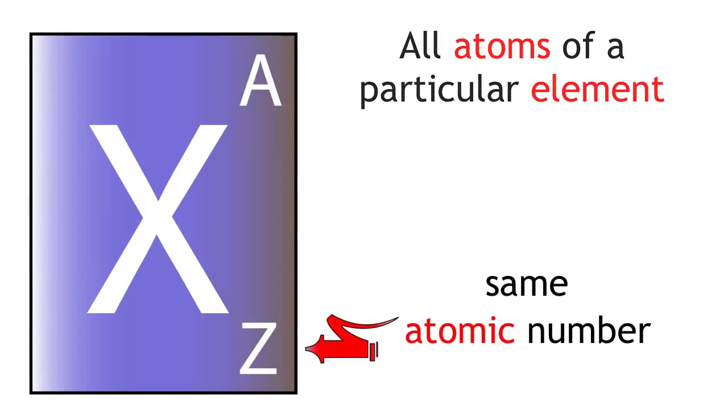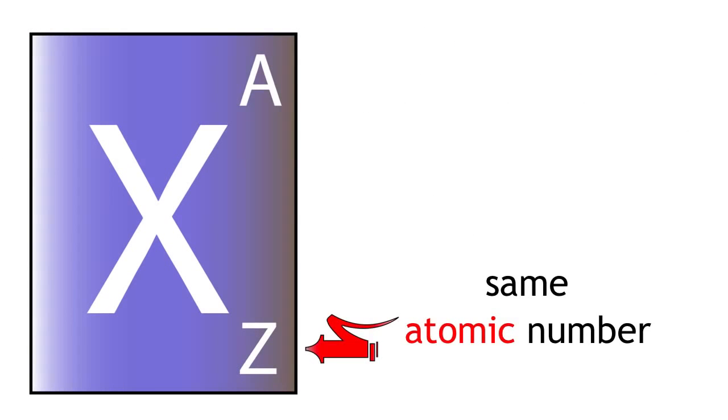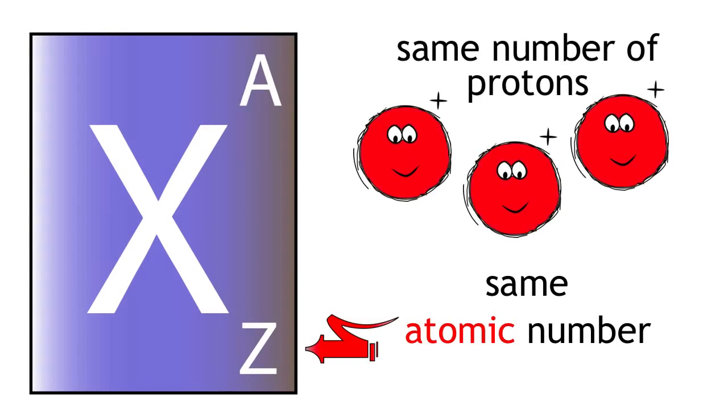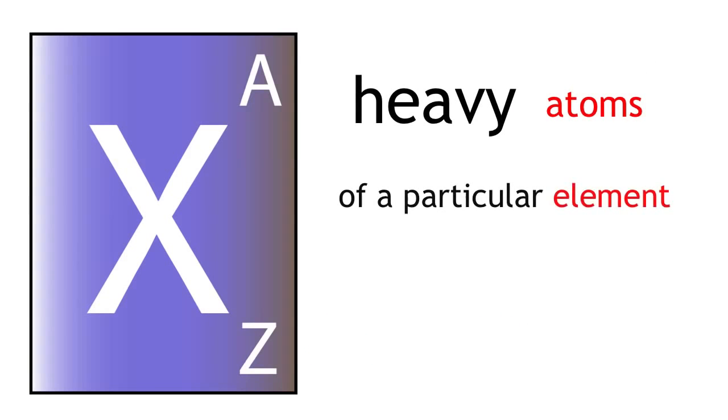All atoms of a particular element have the same atomic number. This means that they all have the same number of protons. But sometimes you can find heavy atoms of a particular element. These atoms have a higher mass number.